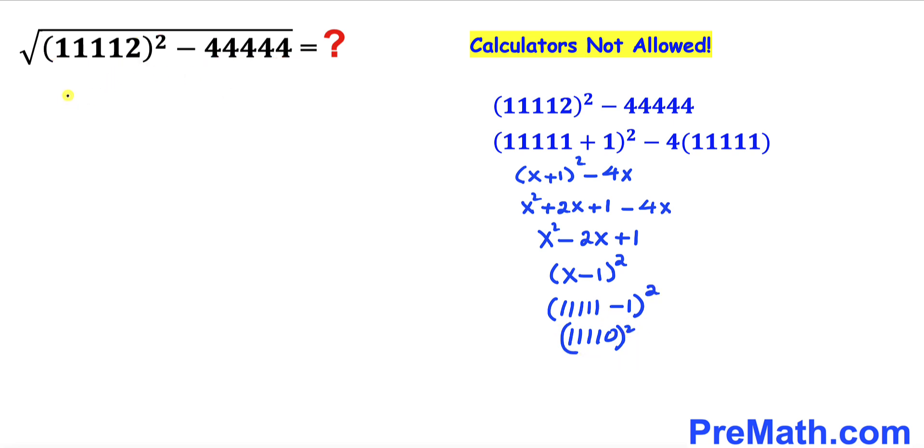Therefore this expression could be written as, I'm going to replace this radicand by this one. So I'm going to write down the square root of (11110)². Now we can see this square and square root undo each other, so we are simply ended up with 11110, and that's our simplified answer.